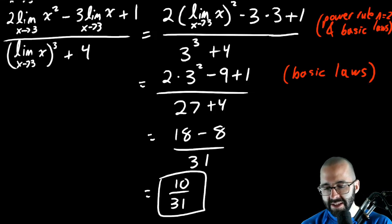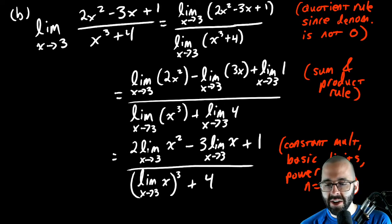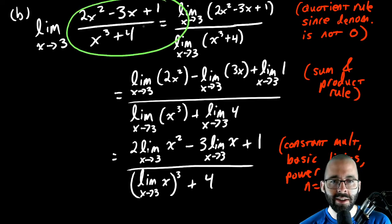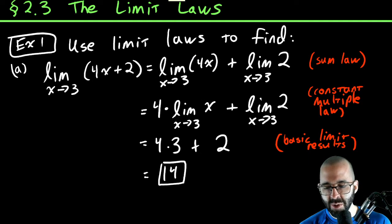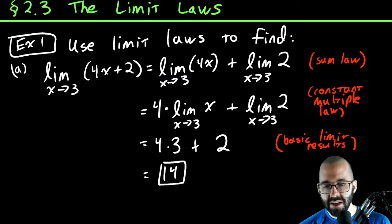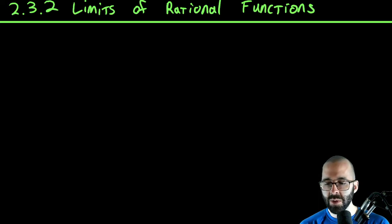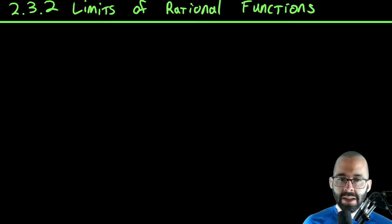You may have noticed in these last videos, 10 over 31 was our limit value. 10 over 31 was also just the function value. It turns out that we really could have just plugged in 3 and gotten the answer. It turns out in Example 1a from the last video, we basically could have just plugged in 3 into this function as well and gotten the limit. We would have gotten the right answer. So a natural question arises: does that work all the time? If not, when does it work? When can we just plug in?